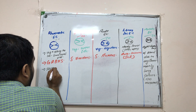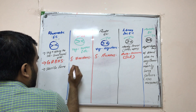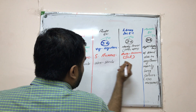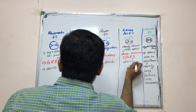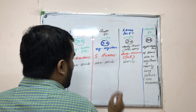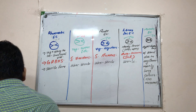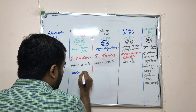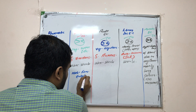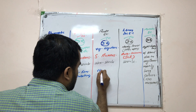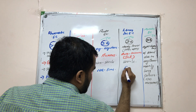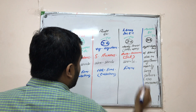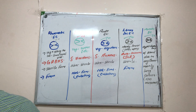Regarding sterile versus non-sterile: rheumatic endocarditis is a sterile form, SABE is non-sterile, and acute endocarditis is also non-sterile. Libman-Sacks is sterile — so only rheumatic and Libman-Sacks are sterile. Regarding firmness: SABE and acute are not firm, meaning they can cause embolism. Rheumatic and Libman-Sacks are firm, so no embolism occurs.